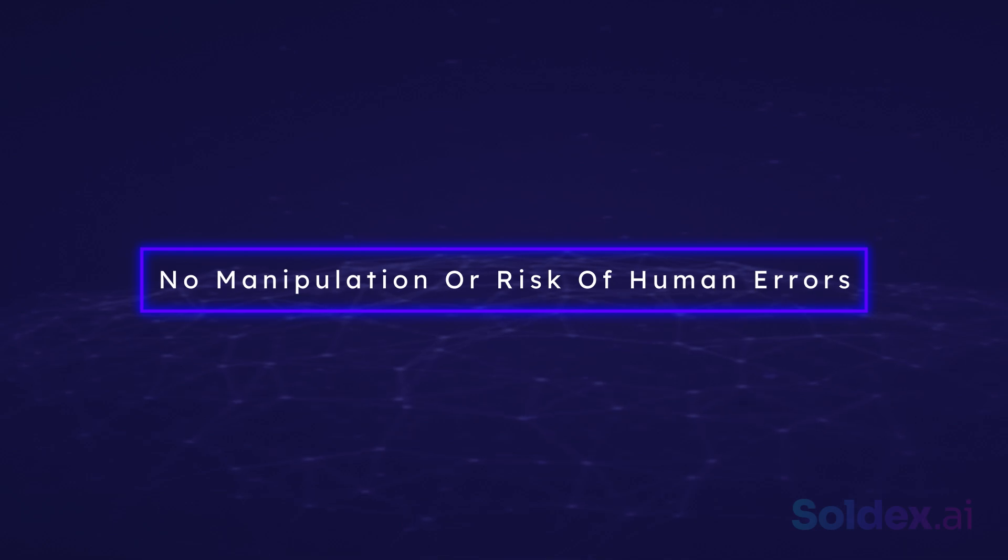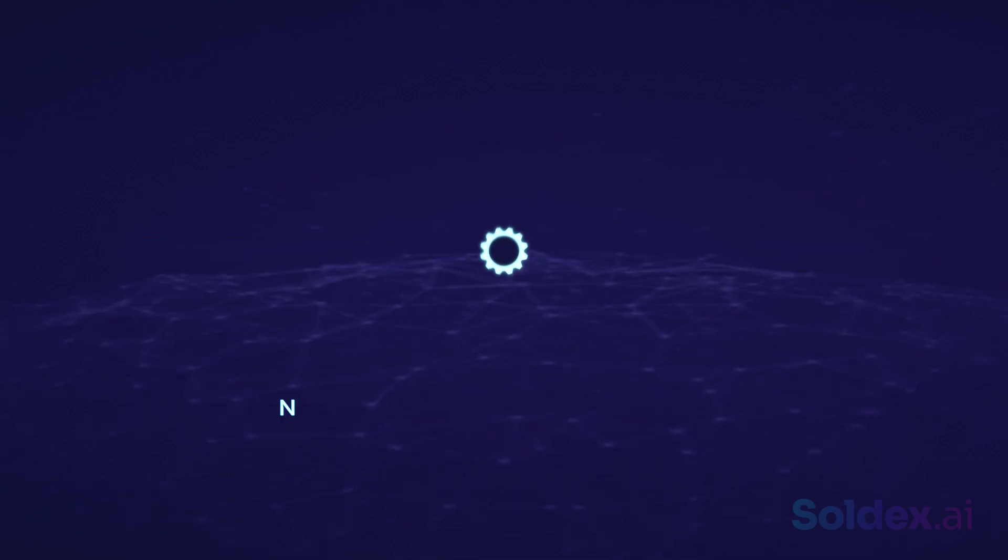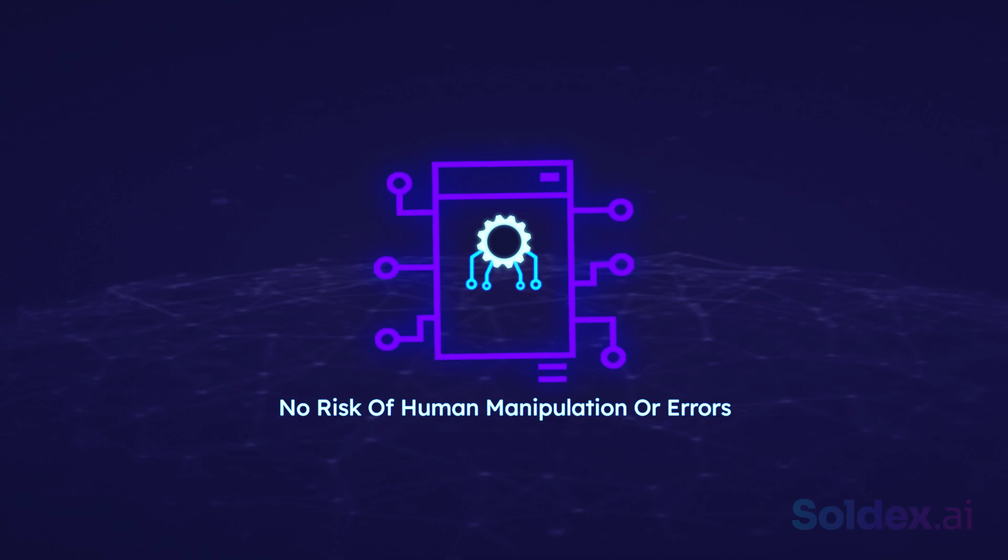No manipulation or risk of human errors. With AMMs, there is no risk of human manipulation or errors. This is because a smart contract and an algorithm control everything.